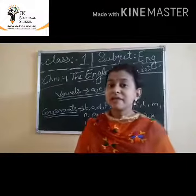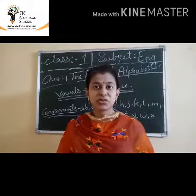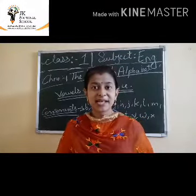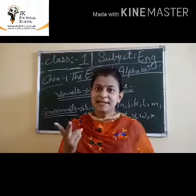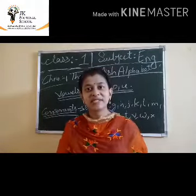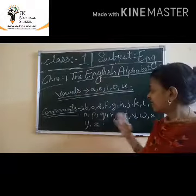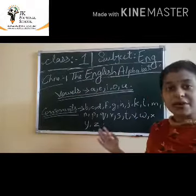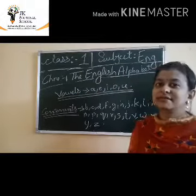What are the vowels? A, E, I, O, U are known as vowels, and the remaining rest of the letters are known as consonants. It is very simple and easy.